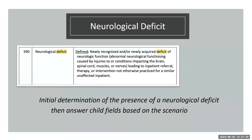Neurological deficit: the definition itself has not changed—it remains a newly recognized or newly acquired deficit of neurologic function. However, how we delineate neurological deficits in the child fields is what changes. You must first identify the presence of a neurological deficit, and only then go on to answer the child fields. No longer do we select events like stroke or subdural bleed directly—you first identify a neurological deficit.